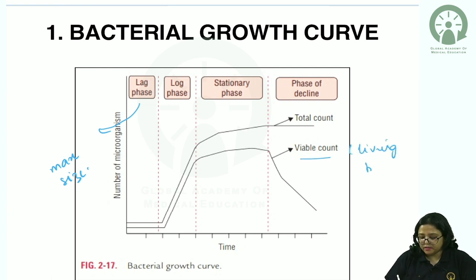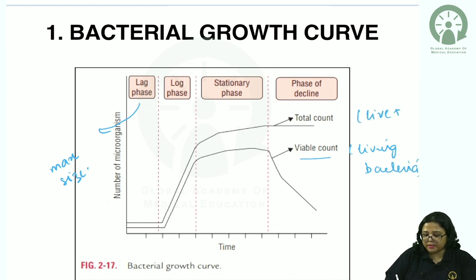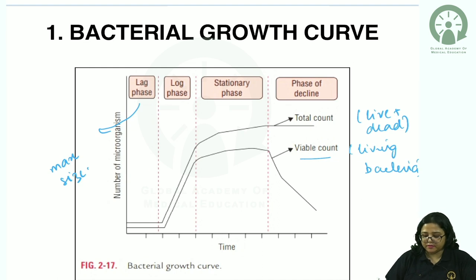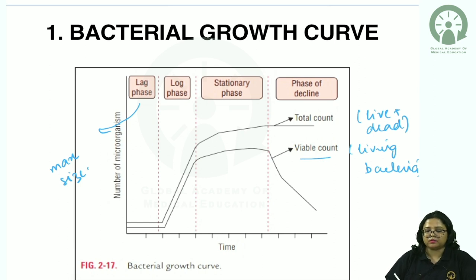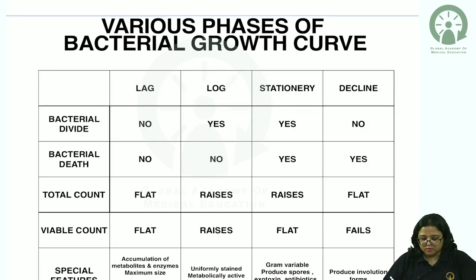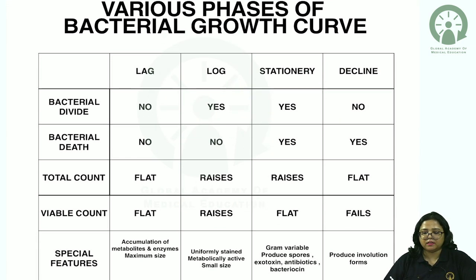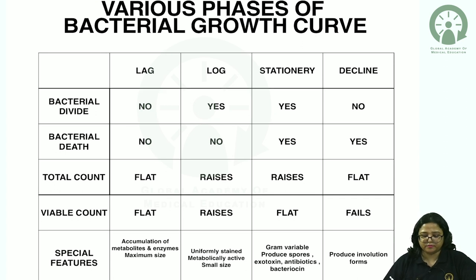Total count will be higher than viable count in the stationary phase. In the phase of decline, metabolites are almost exhausted, so more bacterial population dies. The viable count decreases, but the total count — consisting of both live and dead bacteria — remains the same. This is the summary of the various phases of the bacterial growth curve.